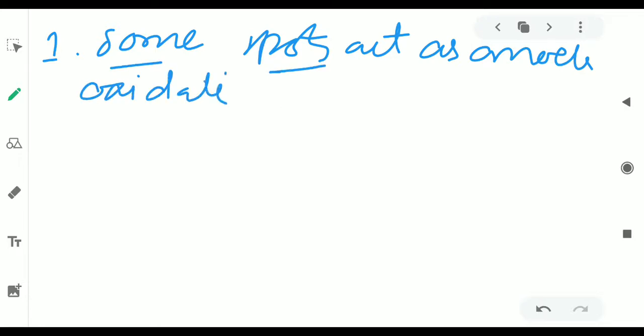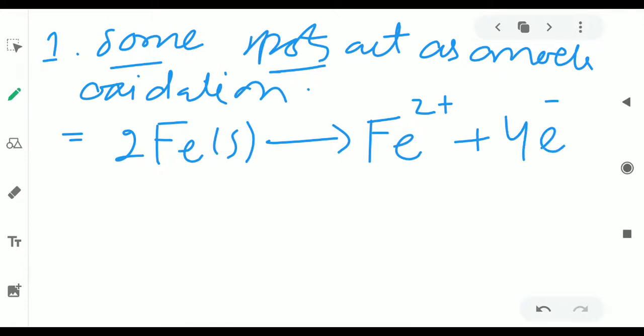Some spots of the metal act as anode where oxidation takes place. Some spots act as anode. So, in galvanic cell, we know that oxidation reaction takes place. And the matter gets oxidized. The following reaction takes place: 2Fe(s) → 2Fe²⁺ + 4e⁻. The electrode potential of this reaction is minus 0.44 volts. This is the one point. Which point act as anode.